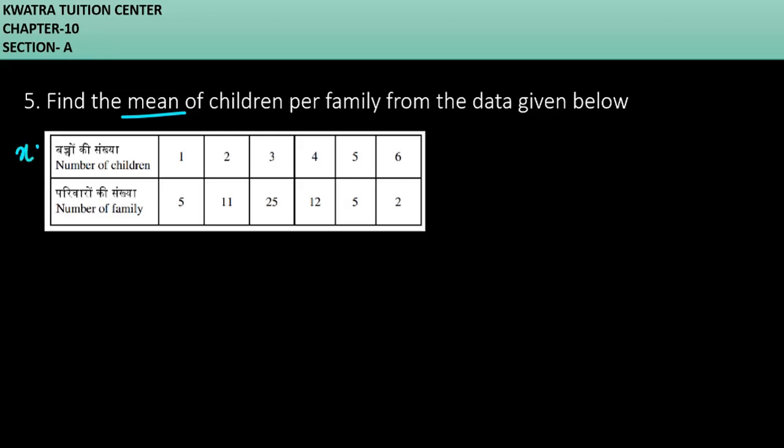So xi is given to you. Fi is given to you. Third column is called product of xi and fi.